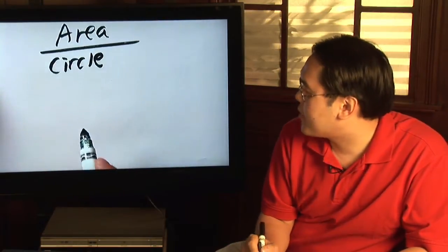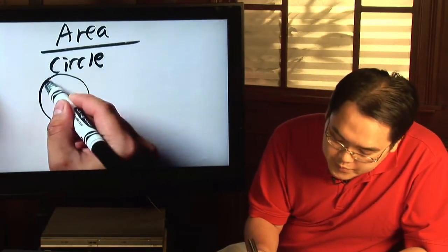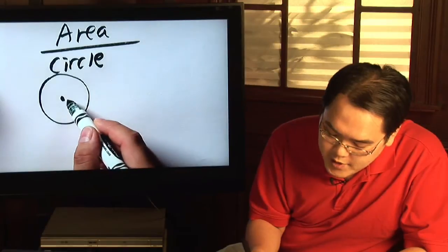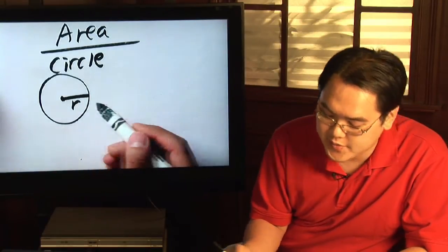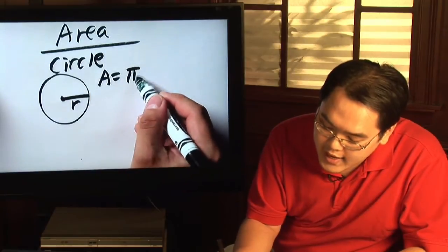A circle is probably the most unique out of the bunch in the common geometric shapes, in that a circle, what you need to know especially is to find the radius of a circle, because the area formula is A equals pi r squared.